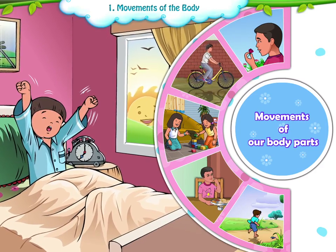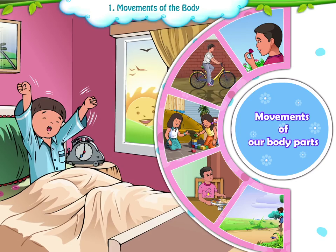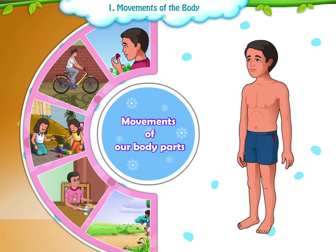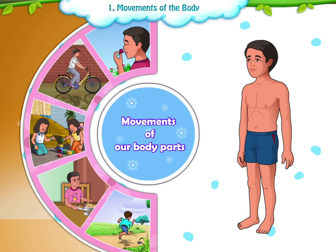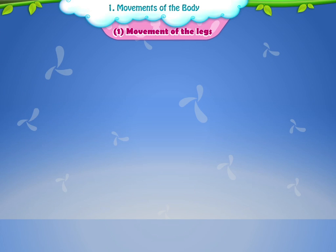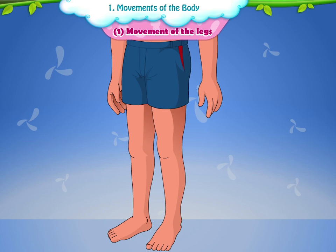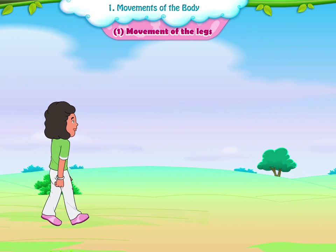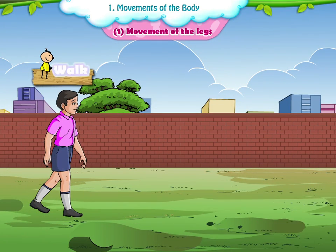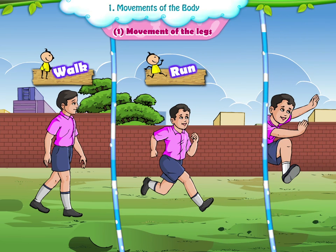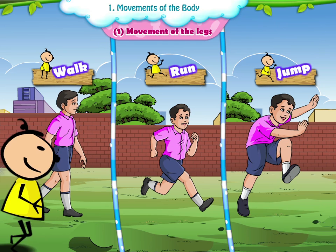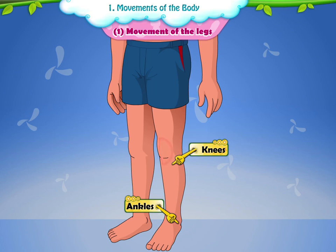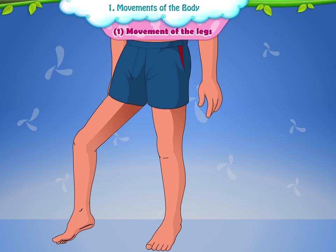Early in the morning, we get up from the bed and our body starts with its movement. Let's observe how the various parts of the body perform their functions. Movement of the legs: With the help of the legs, we are able to move from one place to another. Our legs help us to walk, run, jump, etc. With the help of ankles, knees and toes, we are able to bend our legs. Let us see the different movements of our legs.